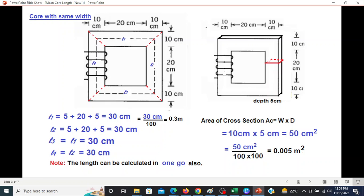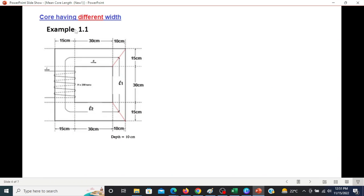So this was easy. Now let's see another one: core having different widths. Now this width is 10 cm, but this width is 15 cm, 15 cm and 15 cm. So here also we'll draw the corners, especially here where the width is different, and we assume this to be a different part.